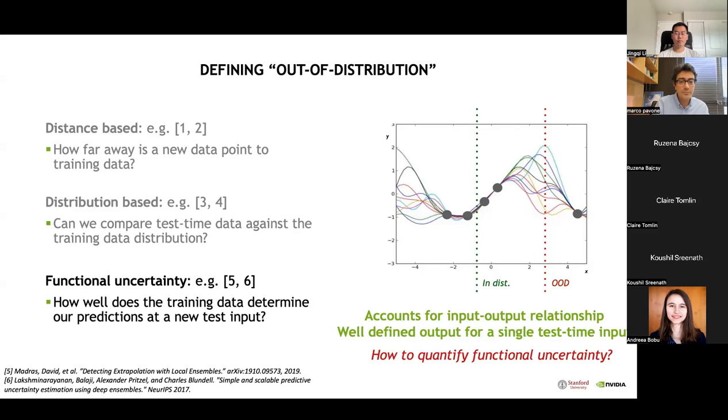To address these shortcomings, our insight is to embrace the notion of out-of-distribution from the perspective of functional uncertainty. Specifically, we argue that an input is out-of-distribution for a given prediction task if the prediction for that input is not well determined by the training data. This is appealing because it focuses on inputs that are different in a manner that could affect the underlying model's predictions.